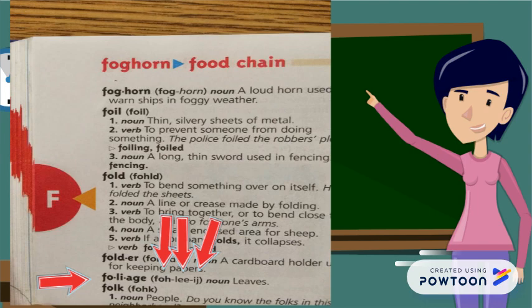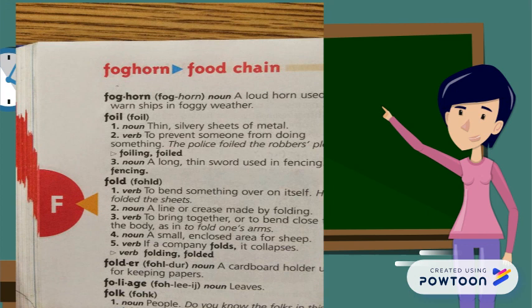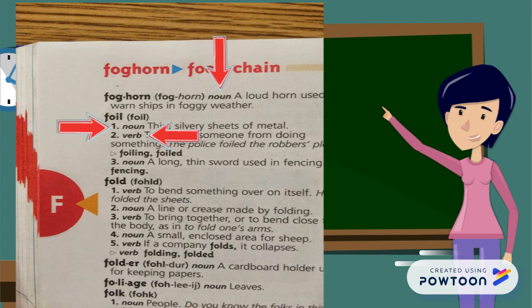The dictionary will also tell you what type of word the word is. For example, foghorn is a noun. Foil can be a noun or a verb. Fold can be a verb or a noun. And folder is simply a noun.